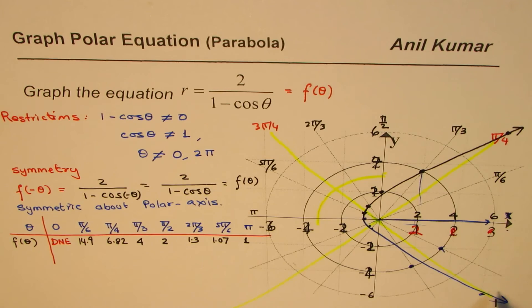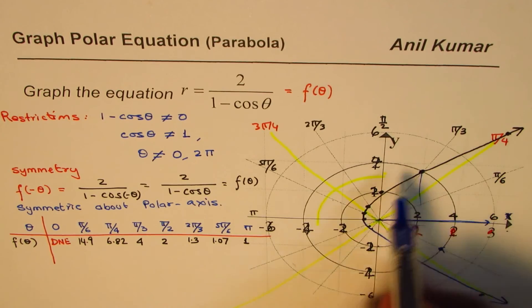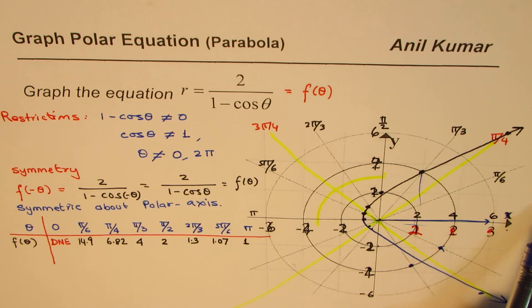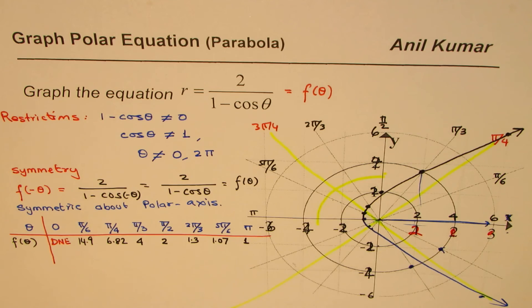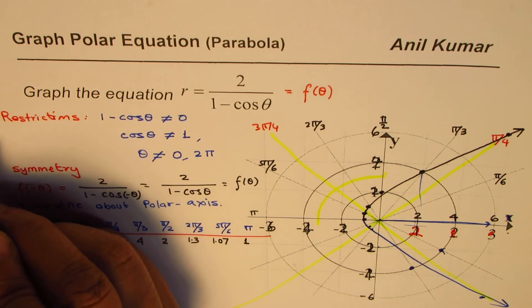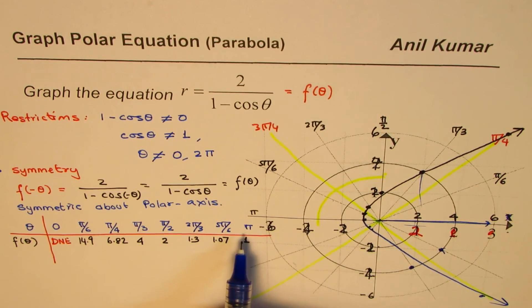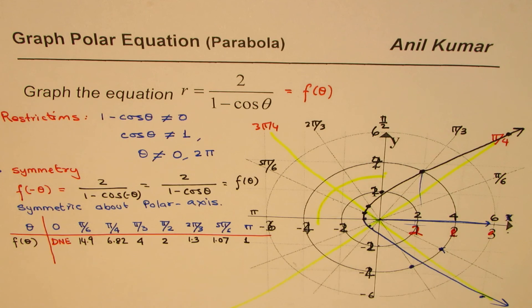If you do it on the right scale, you'll get a neater graph. What we see is a parabola opening on the right side for the equation r equals 2 over 1 minus cos theta. Two important things to remember: look for restrictions, look for symmetry, then plug in a few points and join them with a smooth curve. I hope that helps. Thank you and all the best.